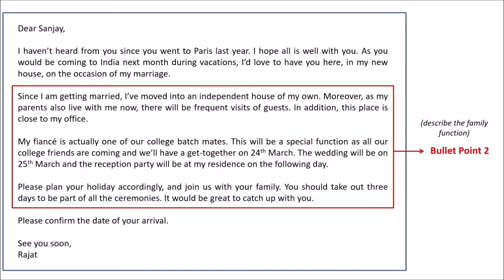The second bullet point says to describe the family function, so paragraph two reads: 'My fiancée is actually one of our college batchmates. This will be a special function as all our college friends are coming and we'll have a get-together on 24th March. The wedding will be on 25th March and the reception party will be at my residence on the following day.'